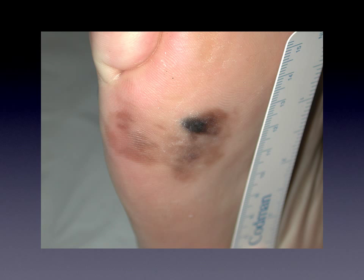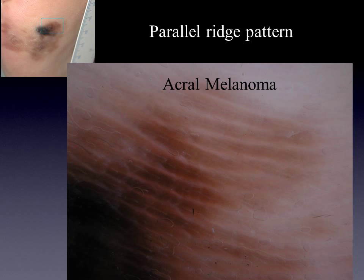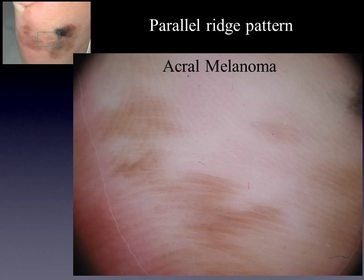Again we see this acral large macule with different colors. Now let's look in dermoscopy. We are here in this field of this large macule. The pigmentation is on the ridges — you can clearly see the pigmentation, while in between the furrows are non-pigmented. This is a parallel ridge pattern which is characteristic for an acral melanoma. Also in the fainter pigmentation area of this macule, if you look carefully you can again see this parallel ridge pattern, confirming this part is also an acral melanoma.